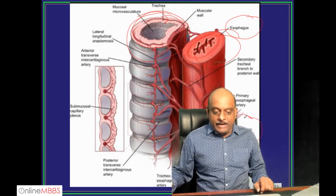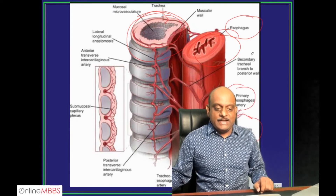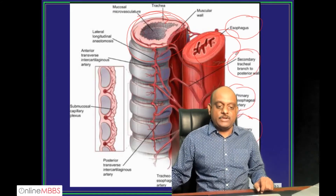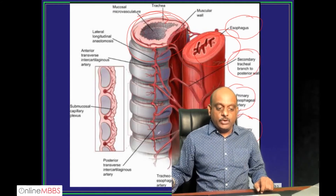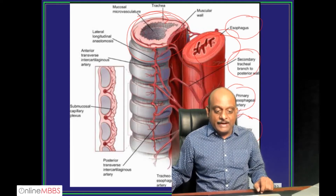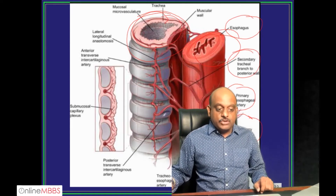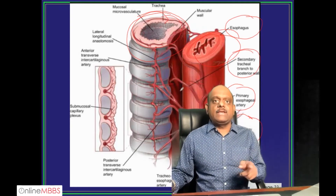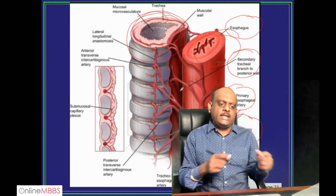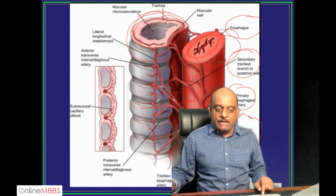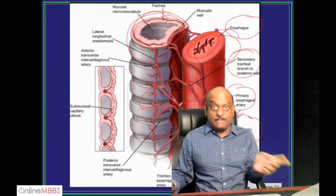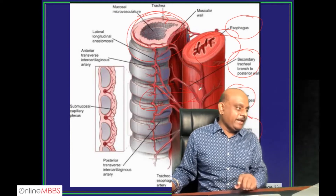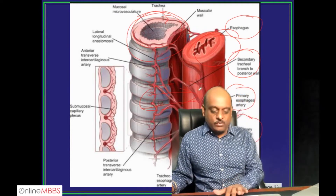In this region, the primary tracheal artery, the primary esophageal artery, and the secondary tracheal branch on the posterior wall form the tracheoesophageal artery. Trachea and esophagus are very close, and that is the reason there can be fistulas which can develop between the two. Tracheoesophageal fistulas can develop very easily.